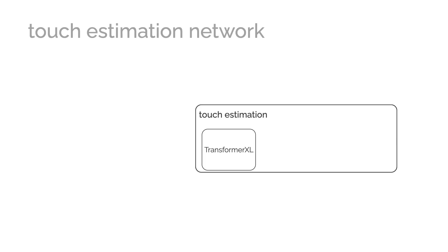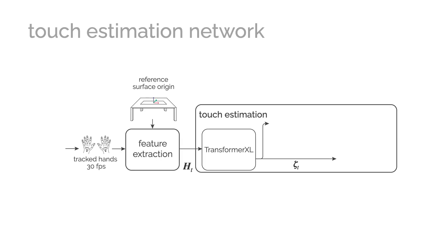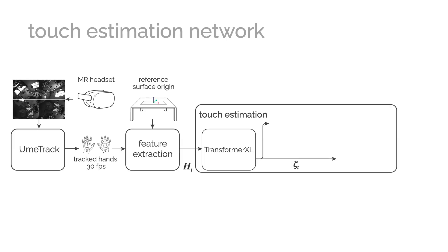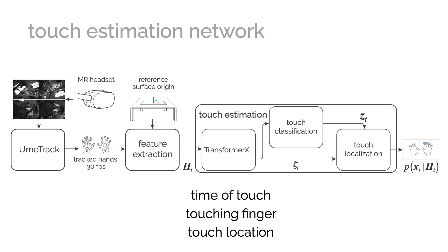We present a neural network that, based on the temporal dynamics of hand poses tracked from the mixed reality headset's cameras, predicts the moment of a touch event, the finger making contact, and the touch location. Importantly, it models the uncertainty of the touch location due to tracking inaccuracies in the form of a bivariate Gaussian distribution.